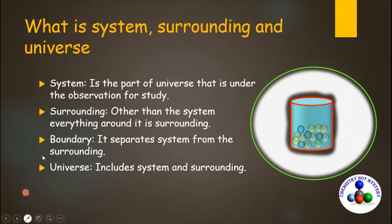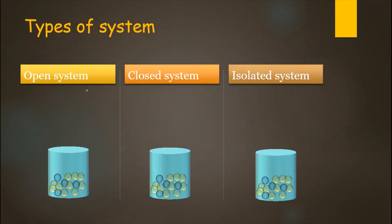Between the system and surrounding, matter and heat can be exchanged. On this basis, you can categorize the system into three categories: one is open system, another is closed system, and the third is isolated system.